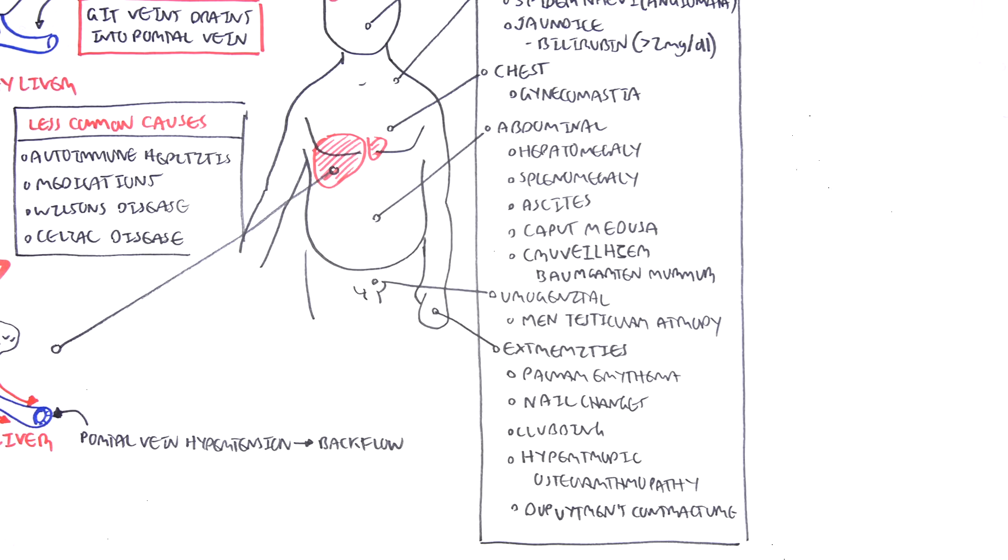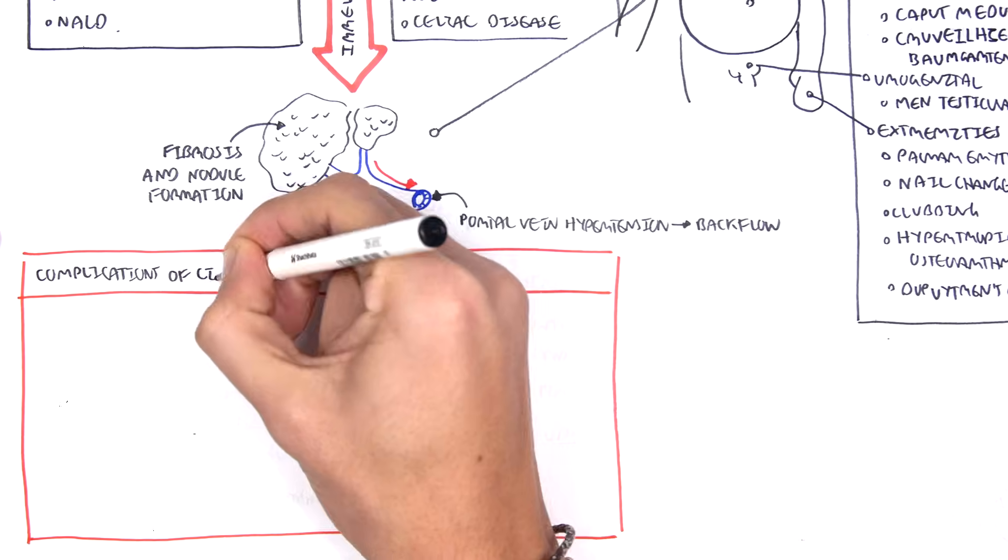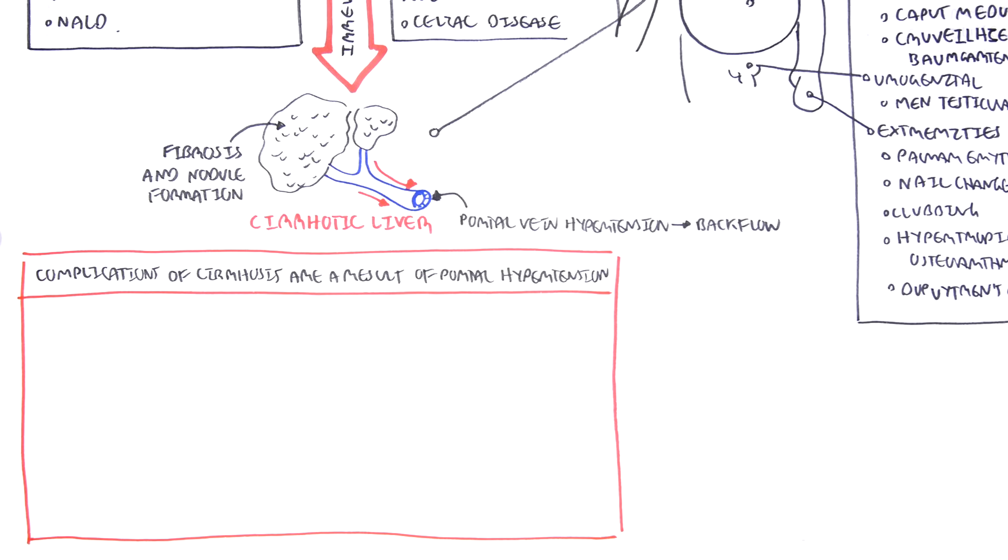The complications of cirrhosis result mainly from portal hypertension, which is basically due to the fibrosis of the liver. The increase in pressure results in the portal vein having a backflow, which will backflow into the organs of the GIT.